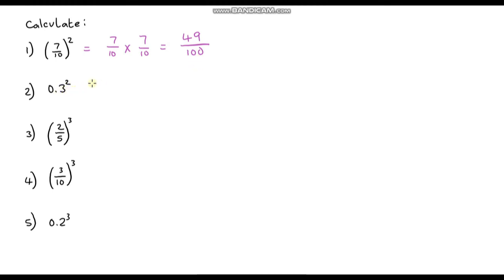Okay question 2, 0.3 squared. Well that is 0.3 multiplied by 0.3. Well 3 times 3 is 9. And I can see that there are 2 digits after the decimal. So I know that there's going to be 2 digits after the decimal in my answer. That's 0.09.